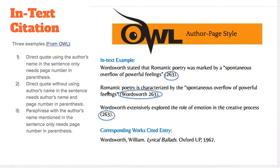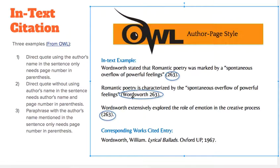Here's the same example but with the author's name inside the parentheses. Romantic Poetry is characterized by "spontaneous overflow of powerful feelings" (Wordsworth 263). Notice there's no P, no comma, and there's a closed parenthesis and a period — the period goes outside the parentheses.